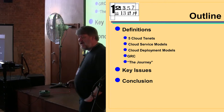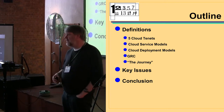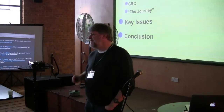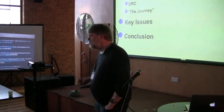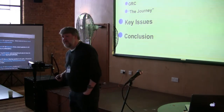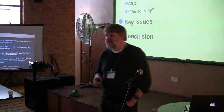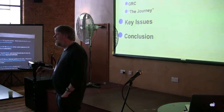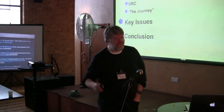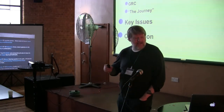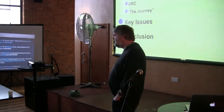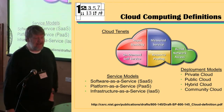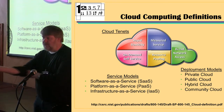We'll look at the way we use the cloud in the service models and the deployment models — what are we trying to do and how are we going to deploy it? And then the key piece that most of us have got wrong so far as a discipline: GRC — Governance, Risk and Compliance. Then we'll talk about the journey, and by the end I expect somebody to shout bingo. The five cloud tenants are: rapid elasticity, measured service, broad network access, resource pooling, and on-demand self-service.